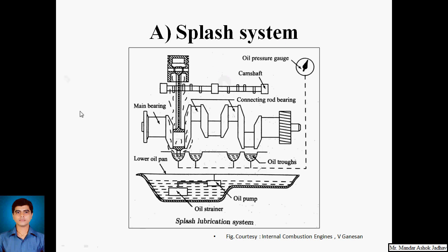The oil pump supplies oil through the distributing pipeline to the oil troughs. As the crankshaft revolves continuously, the dipping of the dipper of the connecting rod splashes the oil all over the parts. The splashed oil reaches each and every component in contact — whether sliding contact or rotating contact — and the drained oil is collected back into the sump.